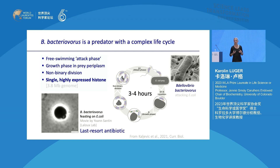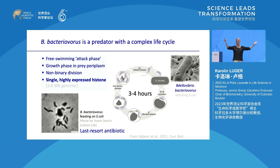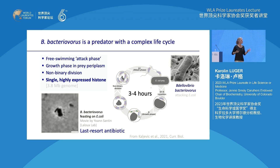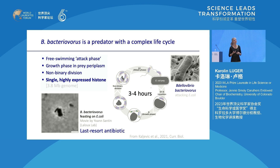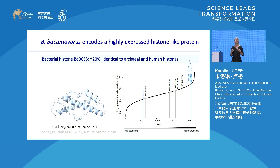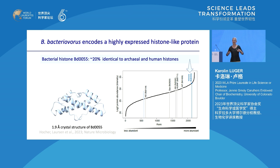Bdellovibrio are the fastest swimmers known in the bacterial world. They swim around finding juicy E. coli, burrow into the periplasm, secrete lipases, DNases, and proteases into the prey bacterium, digest it, use the nutrients for non-binary fission, replicate, and thereby kill their prey — all within about three to four hours. This video taken by the Lalu lab shows the prey getting smaller and smaller as it's digested; Bdellovibrio starts to septate and then the whole thing explodes. This bacterial histone is only about 20% identical to archaeal and human histones, but proteomics analysis has shown it is one of the most highly expressed proteins in this bacterium.